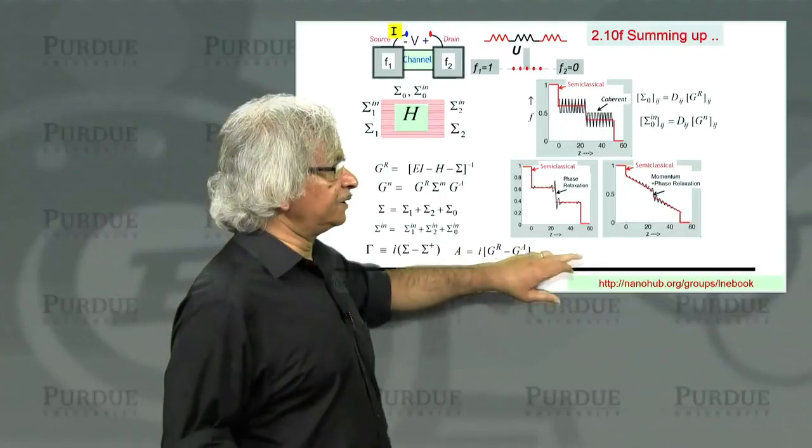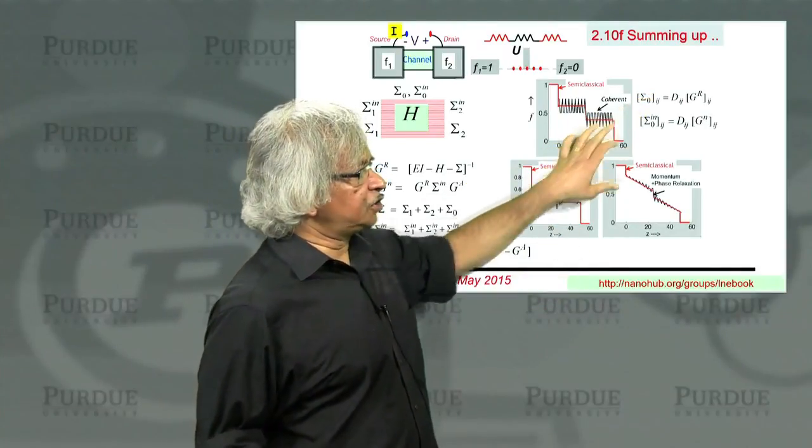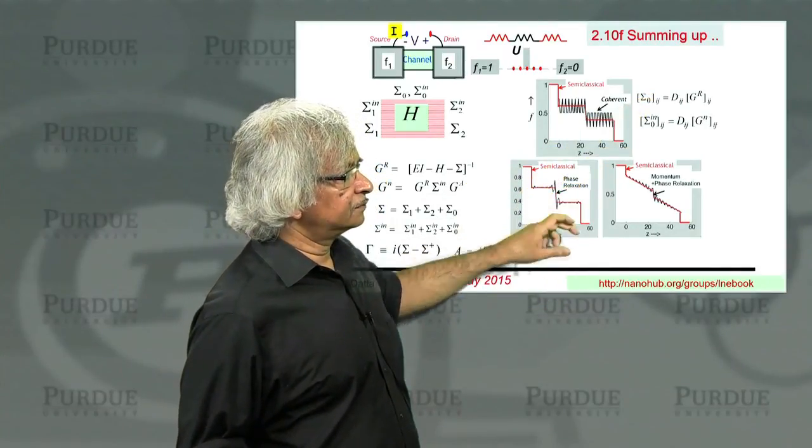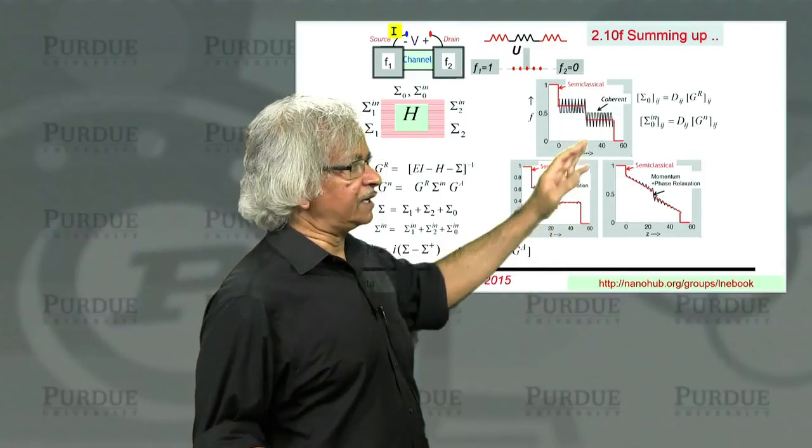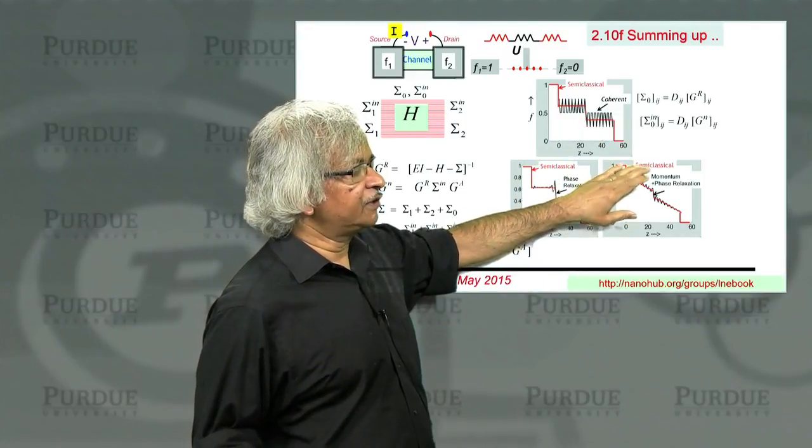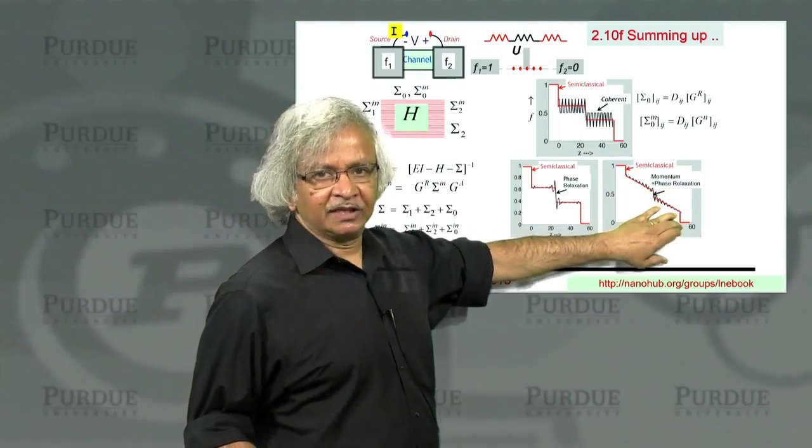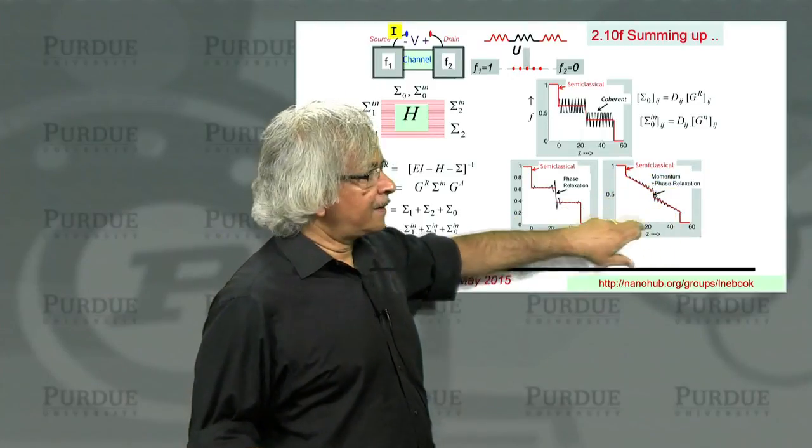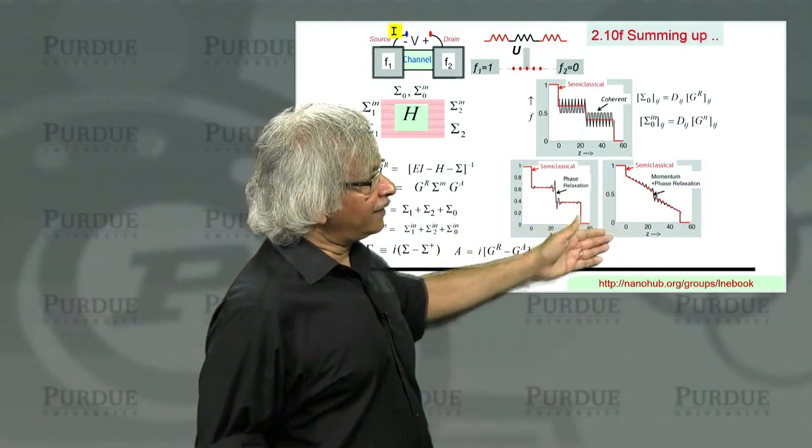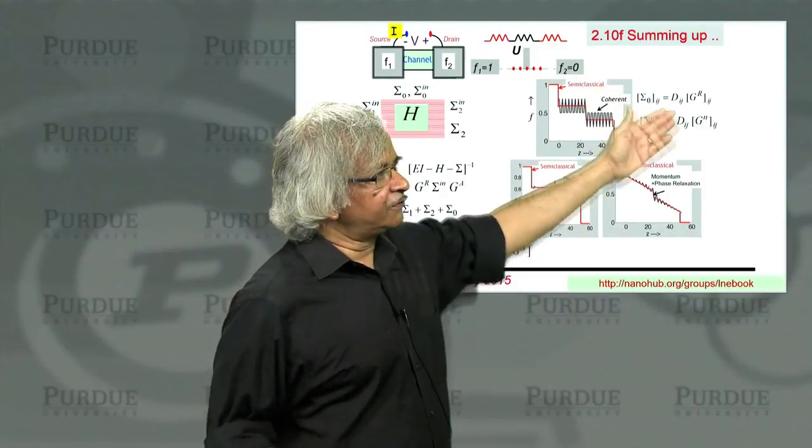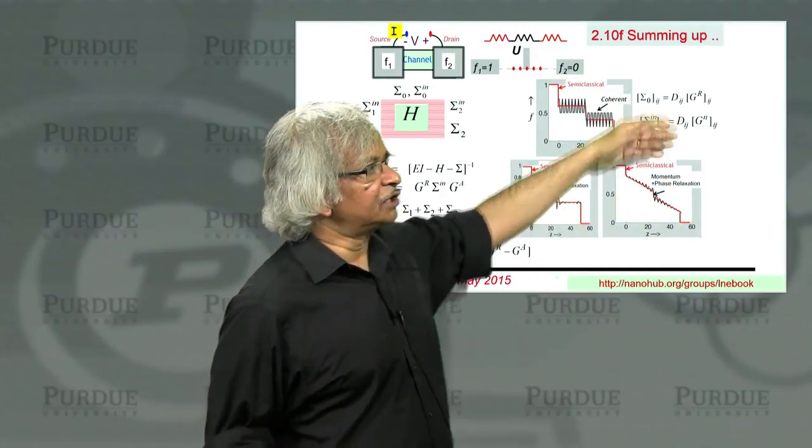How you choose the D will determine whether you get phase relaxation or whether you get momentum relaxation or both. A particular choice of D gave pure phase relaxation, whereas another choice of D gave momentum as well as phase relaxation. So you can include all kinds of different physics through the choice of D.